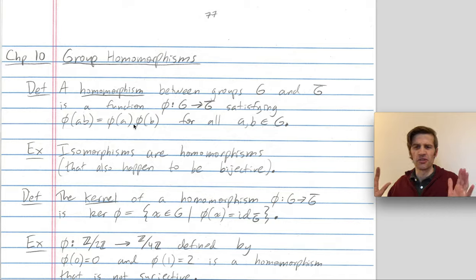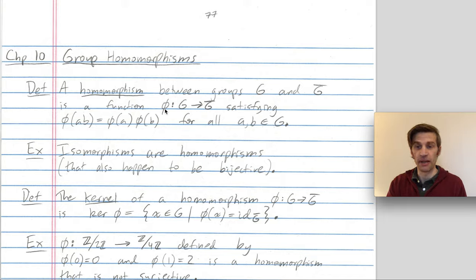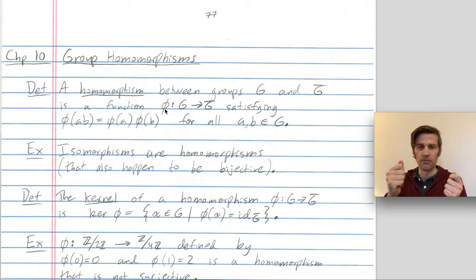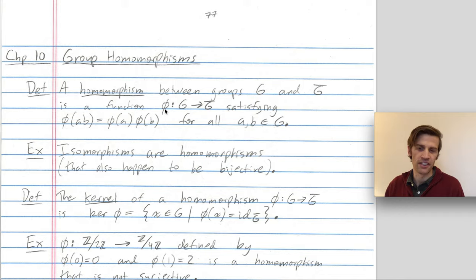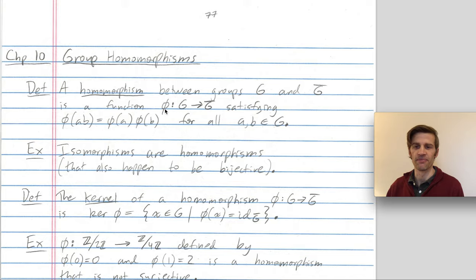This looks really similar to isomorphisms — what's the difference? Isomorphisms are homomorphisms that also happen to be bijective, so the map phi has to be a bijection, and every element in G corresponds one-to-one to an element in G-bar. Think of homomorphisms like rectangles and isomorphisms like squares: every square is a rectangle, but not every rectangle is a square. Same thing — every isomorphism is a homomorphism, but not every homomorphism is an isomorphism.